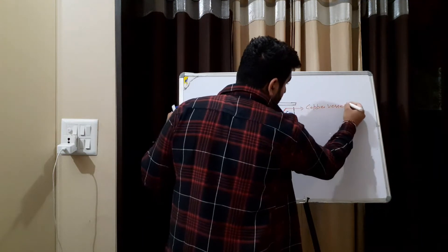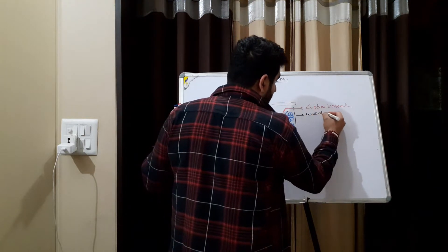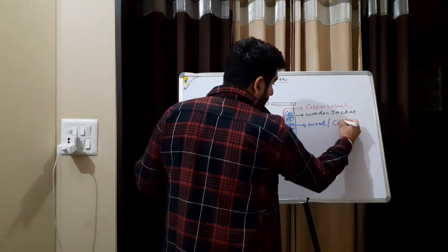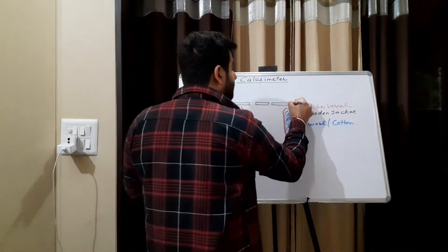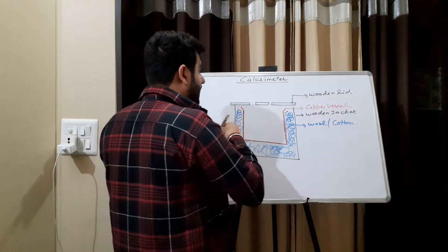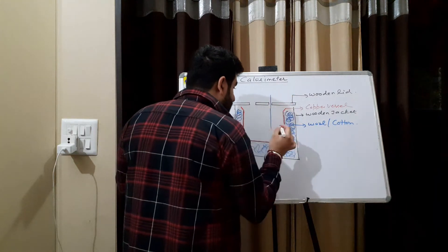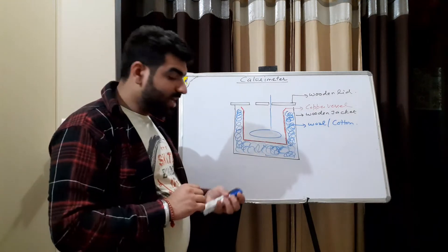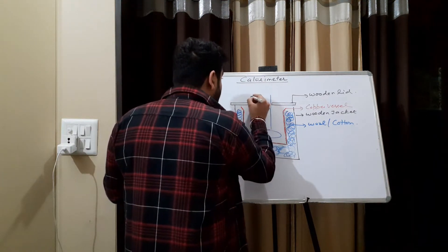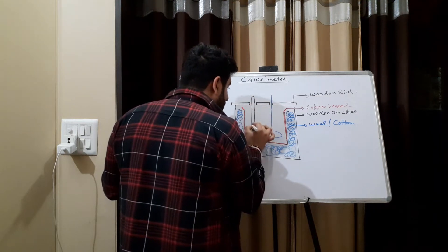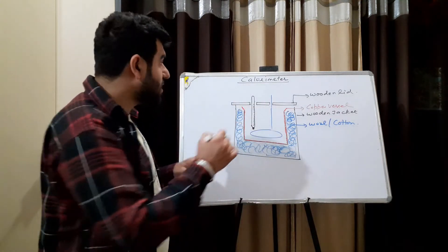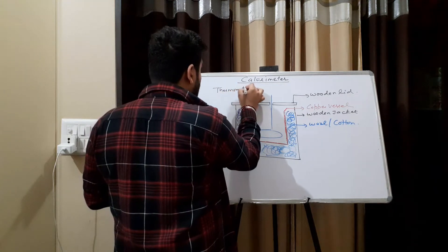The black outer one is the wooden jacket, the blue one in between is either wool, cotton, or any insulator, and the upper part is the wooden lid. Through the two holes in the lid, one is the stirrer — added so that the temperature of the entire content will be uniform — and the other hole holds the thermometer, which measures the temperature of the contents.